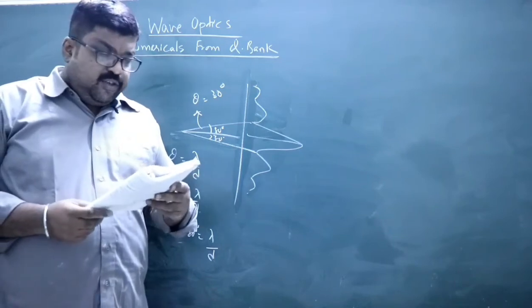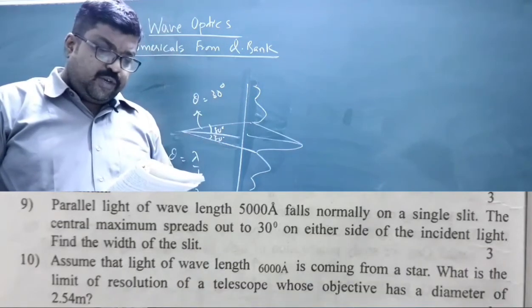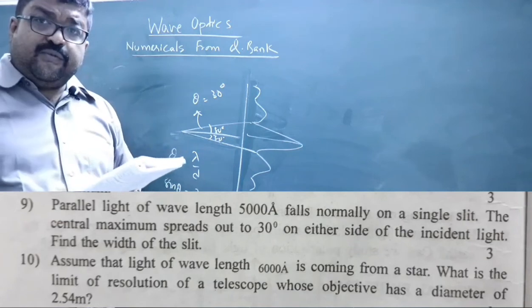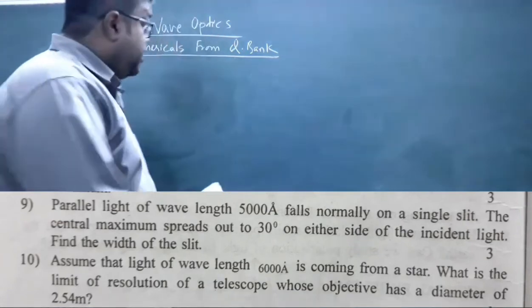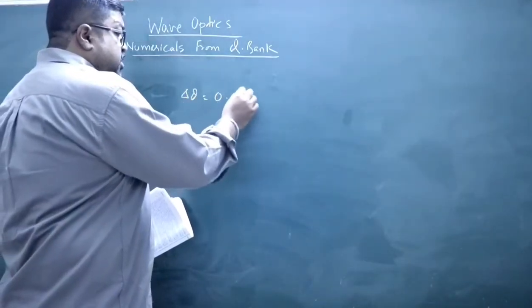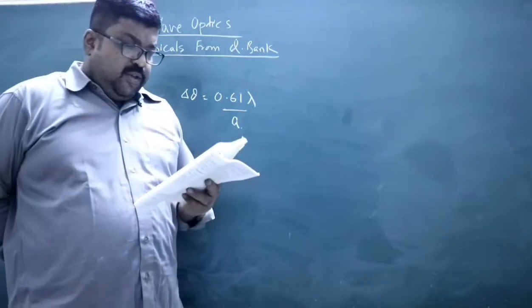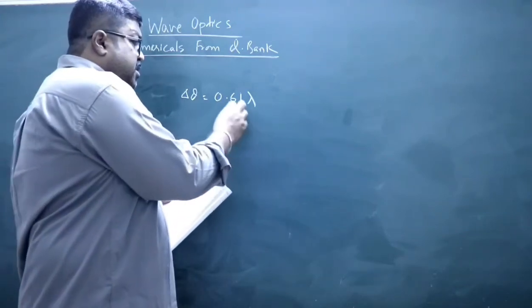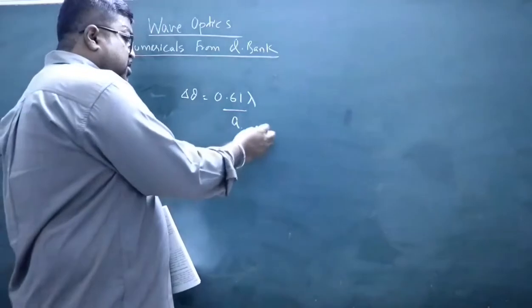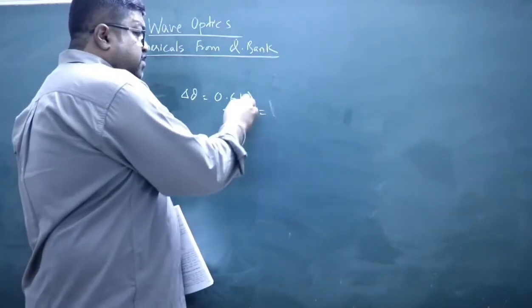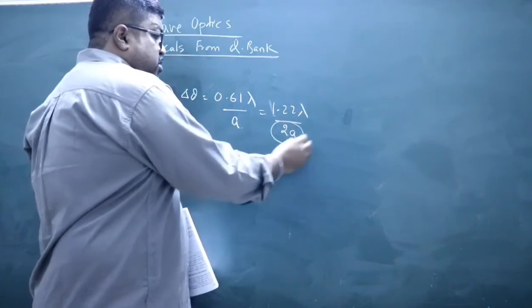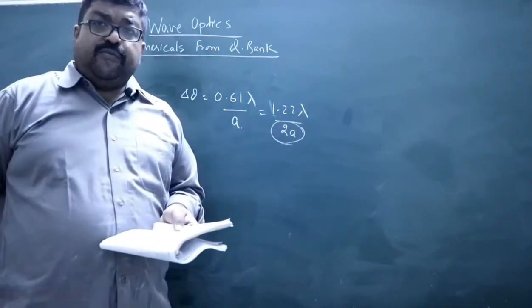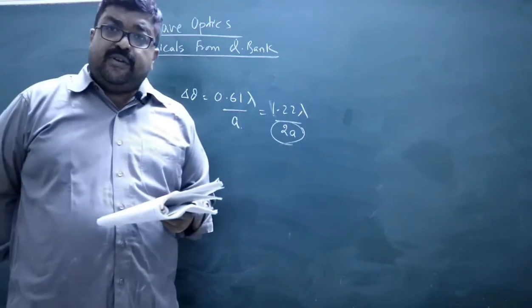Question number ten: Assume that light of wavelength 6000 Å is coming from a star. What is the limit of resolution of a telescope whose objective has a diameter of 2.54 m? The limit of resolution is δθ = 1.22λ/D, where D = 2.54 m is the diameter of the objective. Substituting the given values of λ and D gives the limit of resolution.